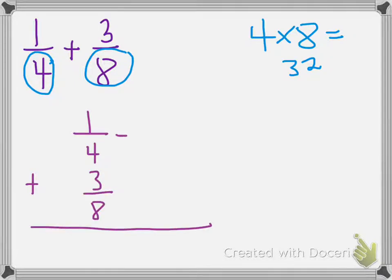And I'm going to set both of these fractions equal to fractions that have 32 as the denominator. So what we're finding right now is we're finding an equivalent fraction for one-fourth, and we're finding an equivalent fraction for three-eighths.